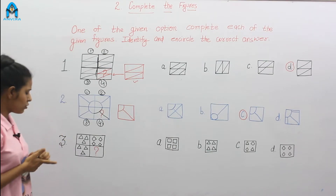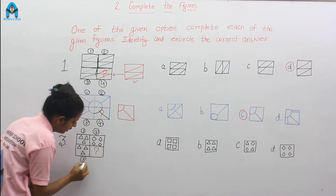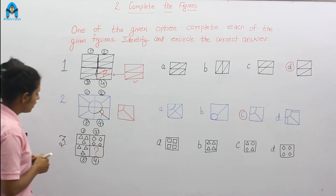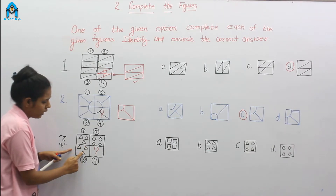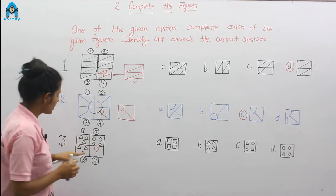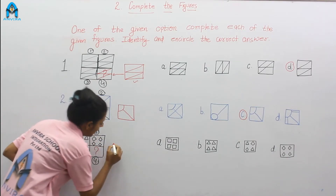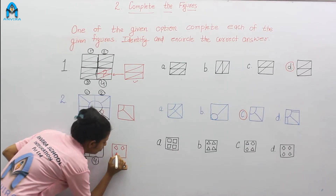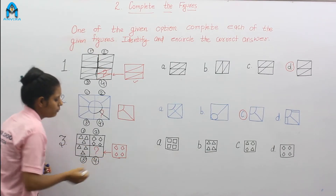Let's go to our next question, question number 3. In this question, the figure is also divided into 4 parts: 1, 2, 3, and 4. And the 4th part is missing. Look at the first part — 1, 2, and 3 triangles. Third part — 1, 2, and 3 triangles. In this part — 1, 2, 3, 4 — there are 4 patterns just like this. It's like 1, 2, 3, and 4. So this pattern comes here.